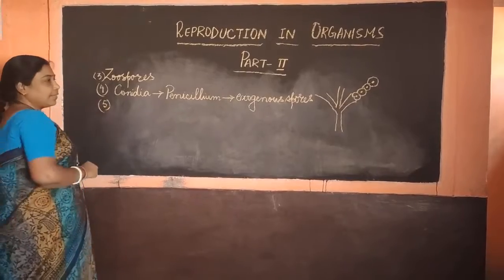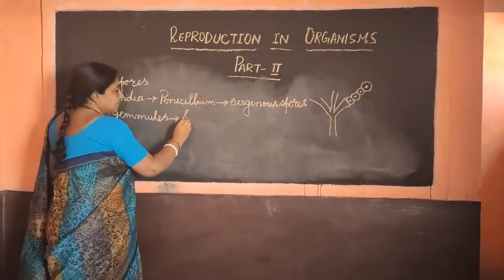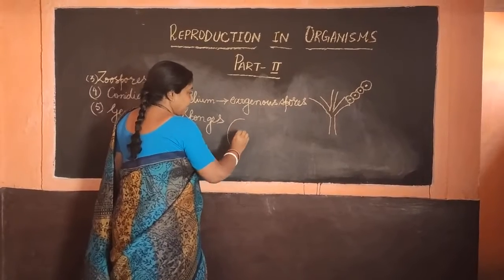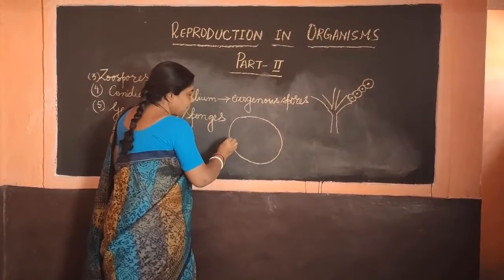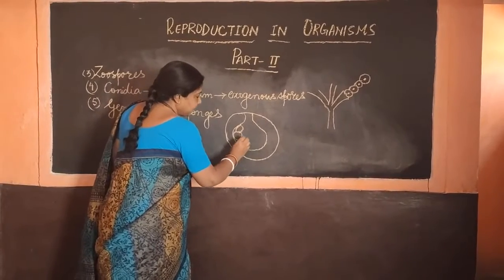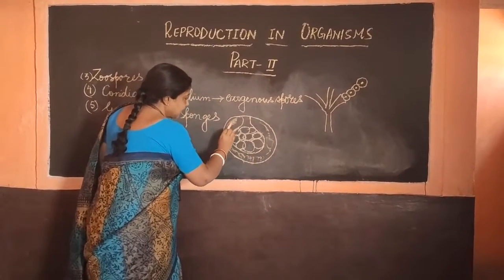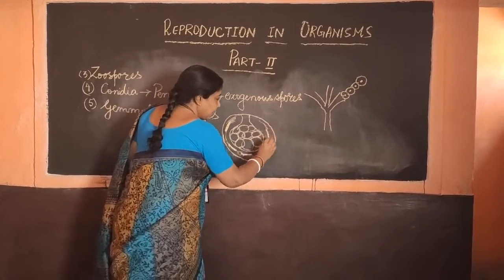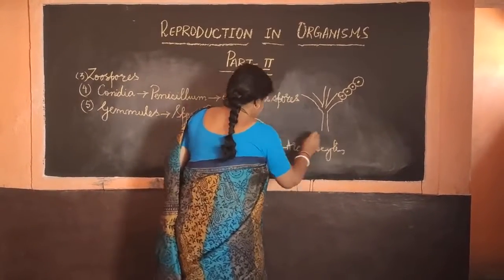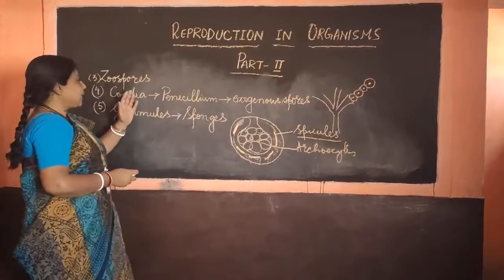Next is gemmules — a very new term for you all — and this is seen in sponges. You will see a structure like this in your NCERT book representing the gemmule. In this structure you will find a jelly-like substance with certain pointed structures known as spicules, and the cells are known as archaeocytes.